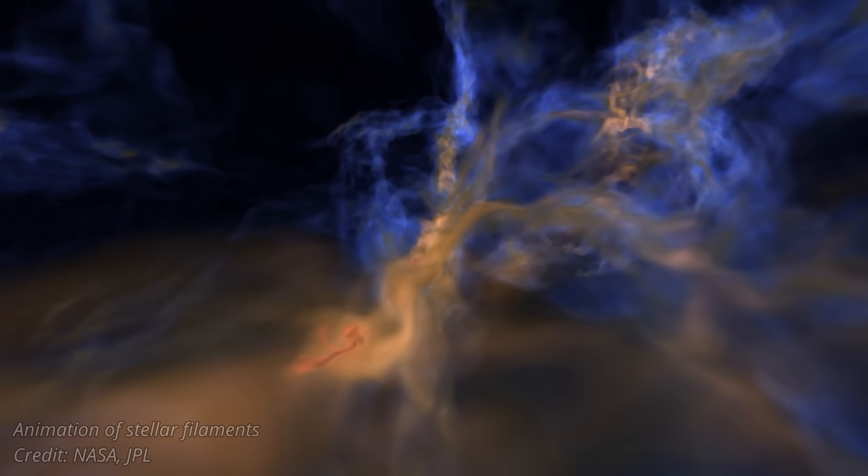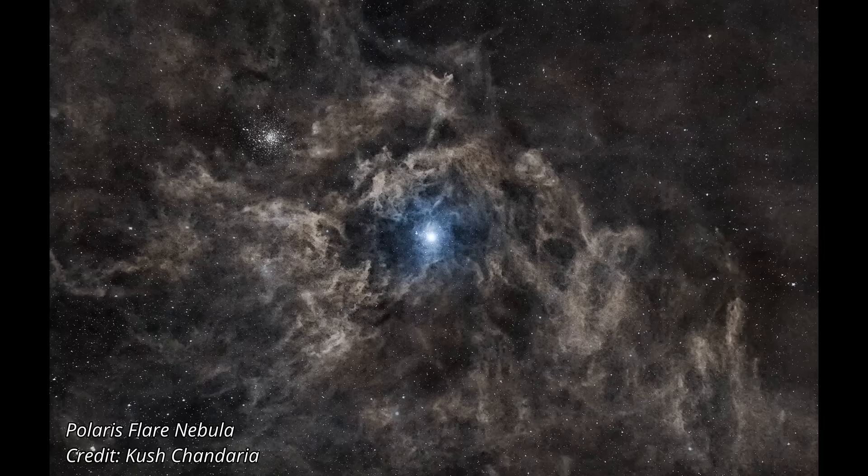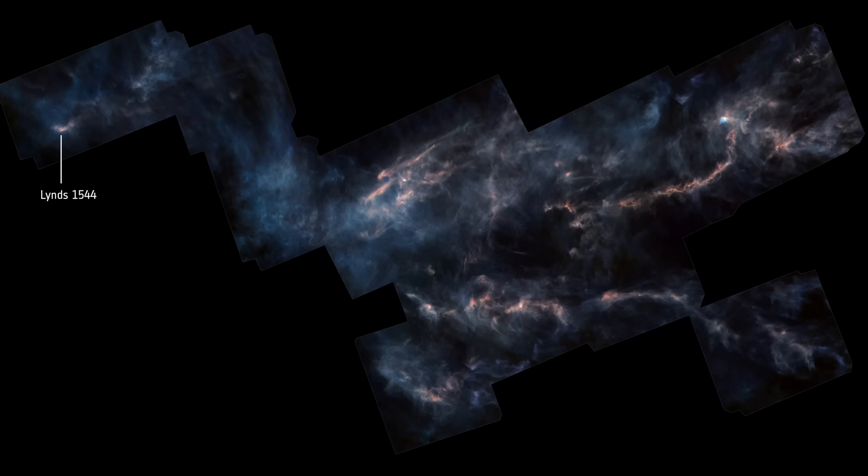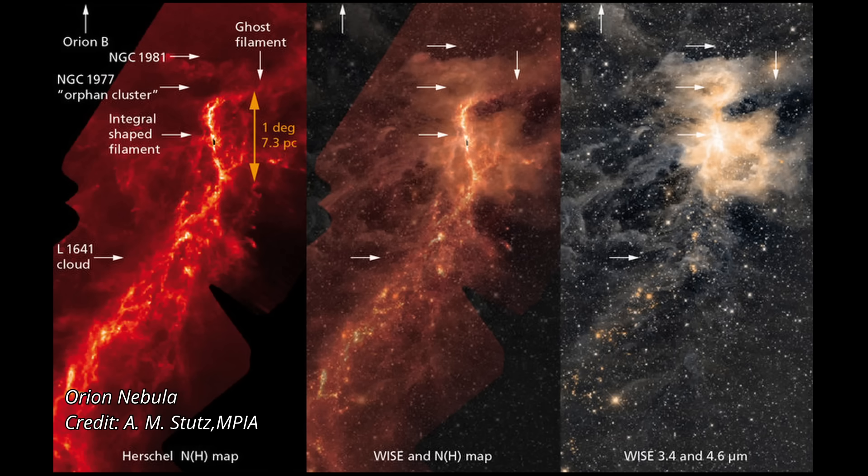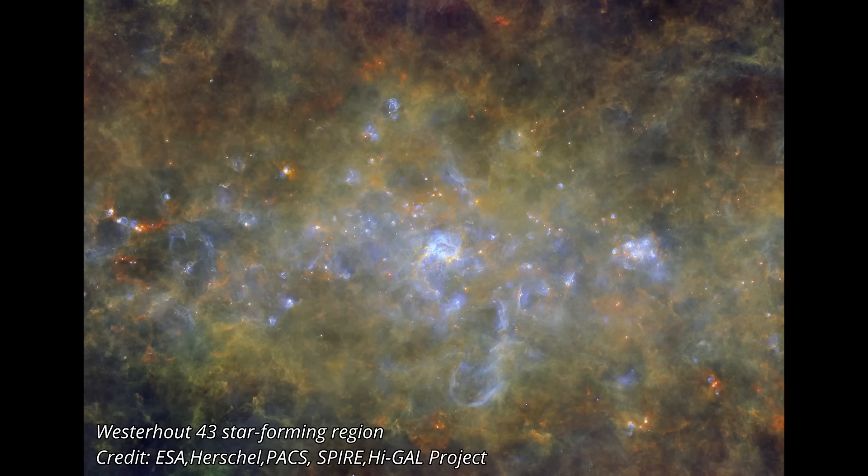In our own galactic neighborhood, we observe several star-forming regions: Orion, Taurus, the Polaris Flare. These regions are filled with long, thin filaments of gas and dust, winding through the darkness and stretching for light years, while measuring just a fraction of a light year across. Along these filaments, stars seem to be forming, as if guided by some hidden structure.